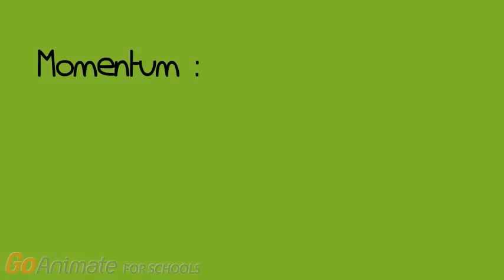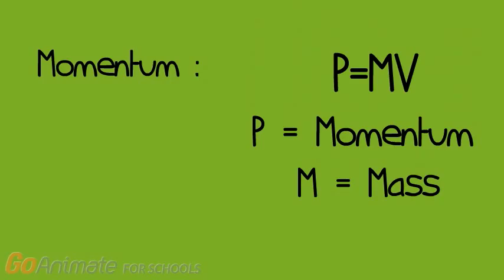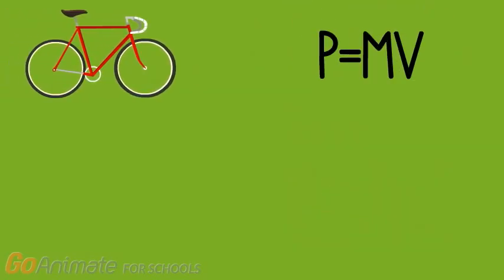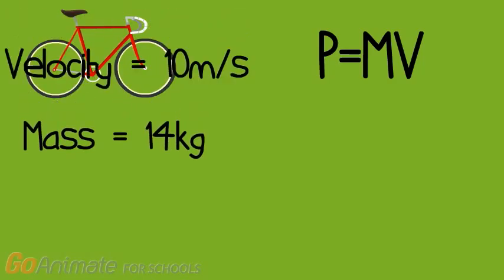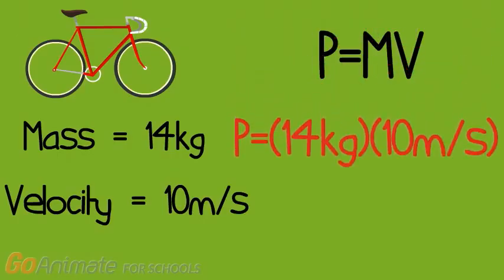Momentum can also be written as P equals MV. P stands for momentum, M stands for mass, and V stands for velocity. For example, let's find the momentum of the bike. The mass is 14 kilograms, and the velocity is 10 meters per second. In order to find the momentum we multiply 10 and 14 together, therefore the momentum of the bike is 140 kilogram meter per seconds.